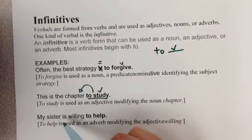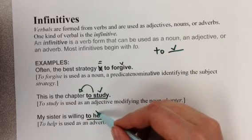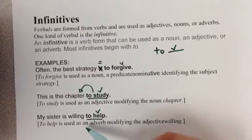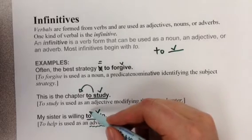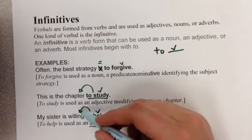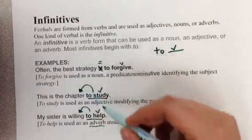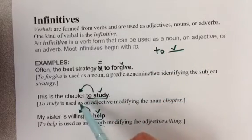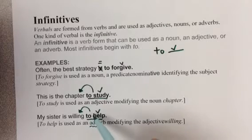My sister is willing to help. Here we have to followed by the verb help. So that's an infinitive. And in this case, we have an adverb. We have an adverb describing how my sister is willing. Adverbs tell us how is one of the things that adverbs can do. Just like how to study here tells us is an adjective because it tells us which chapter, this is an adverb because it tells us how willing.